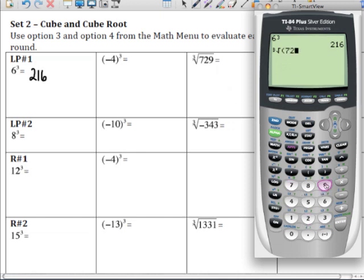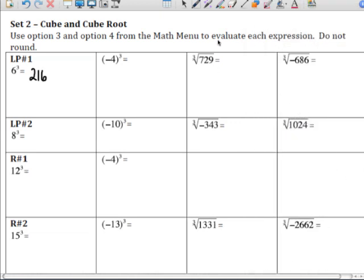And then enter the value here of 729. And you'll notice, on my calculator, I need to close that parenthesis off. I'm going to hit enter, and I come out with 9.